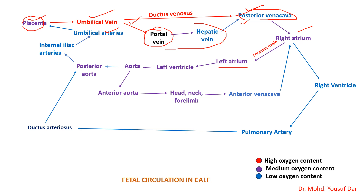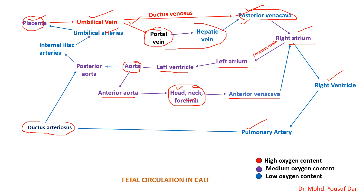From the posterior vena cava, the blood is carried into the right atrium; from the right atrium it goes into the left atrium via the foramen ovale, then to the left ventricle. The left ventricle pumps the blood into the aorta; from the aorta it goes into the anterior aorta, which supplies the anterior parts of the body — the head, neck, and forelimbs. The venous blood is carried by the anterior vena cava back to the right atrium, then into the right ventricle, through the pulmonary artery, and via the ductus arteriosus into the posterior aorta. The posterior aorta carries the blood to the posterior parts of the body and via the umbilical arteries back to the placenta.